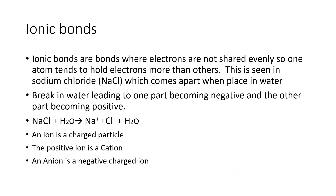We also have ionic bonds. Ionic bonds are bonds where electrons are not evenly shared — one atom tends to hold the electrons more than the other. This is seen in sodium chloride. When put in water, the sodium and chloride disassociate, giving you a sodium ion — a cation — and a chloride ion — an anion.